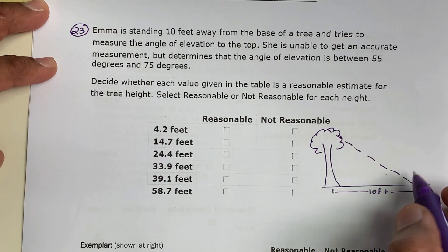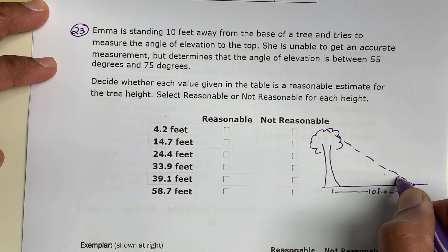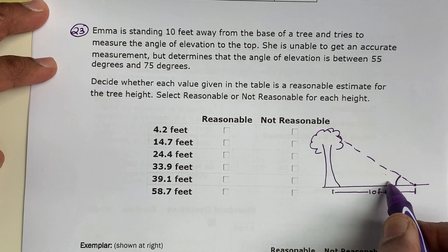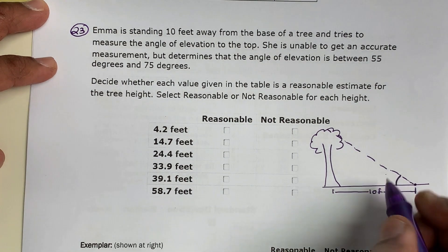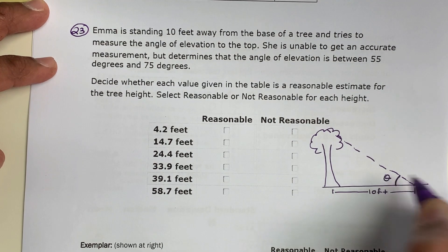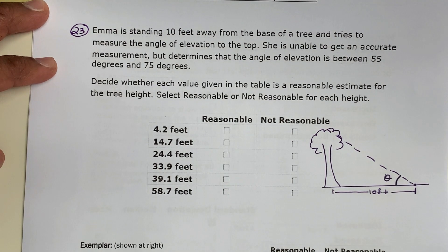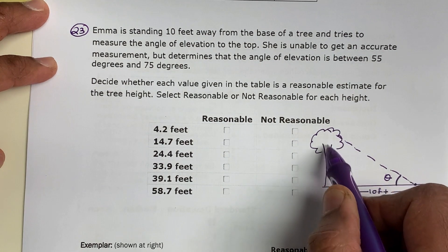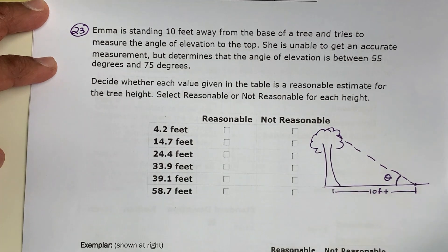She's not sure what this measurement is, but she's thinking this is between 55 and 75 degrees. If it is 55 and 75 degrees, then what is the reasonable answer for the height of the tree?